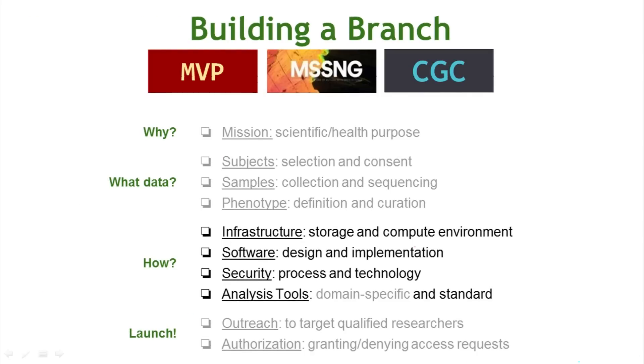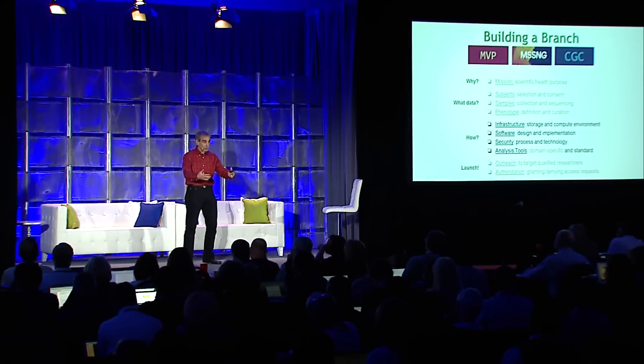By putting those three parallel and different studies side by side, we can see how this is part of moving towards that grand vision. While there are some very study-specific needs — and that's how each study is adding value in its own way — there's also a lot of common elements. How do you build this in a way that allows you, as someone who wants to design another branch, to spend your time working on your science, on your population of interest, on your mission, and not have to spend your time reinventing the plumbing that's common across all of them?